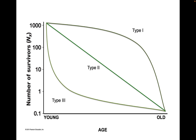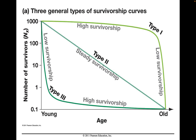We can look at all three types together — Type 1, 2, and 3 — and have an idea, when we think about an organism, what type of survivorship curve it might have, and that relates to how its population will behave in the environment. This figure shows a summary: Type 1 has high survivorship early in life followed by low survivorship later. Type 3 has low survivorship early in life but high survivorship once individuals reach adulthood. Type 2 is a steady survivorship curve throughout life.